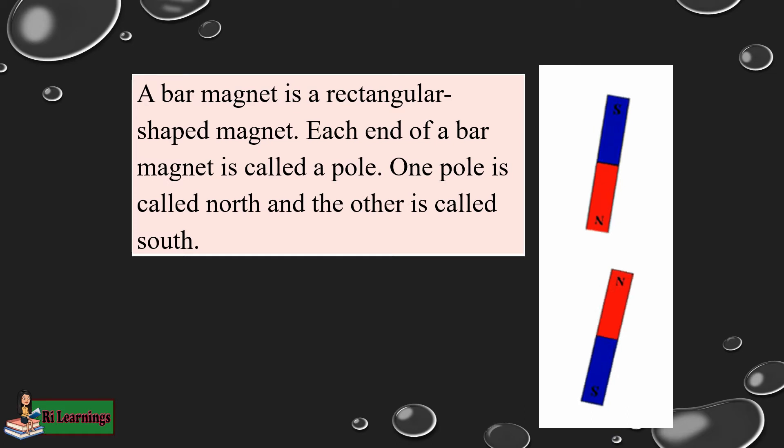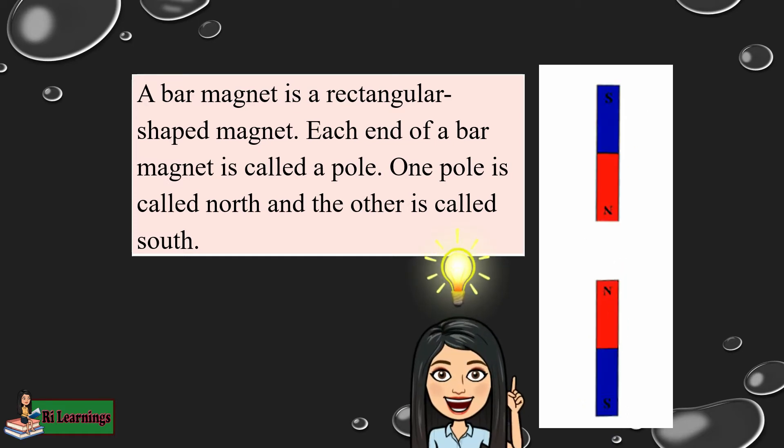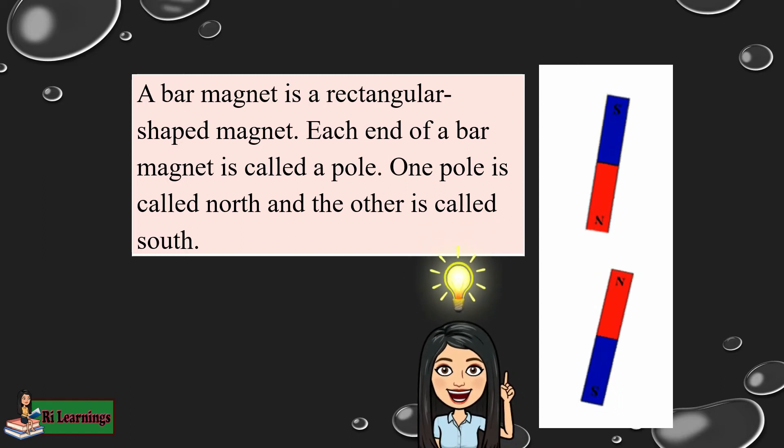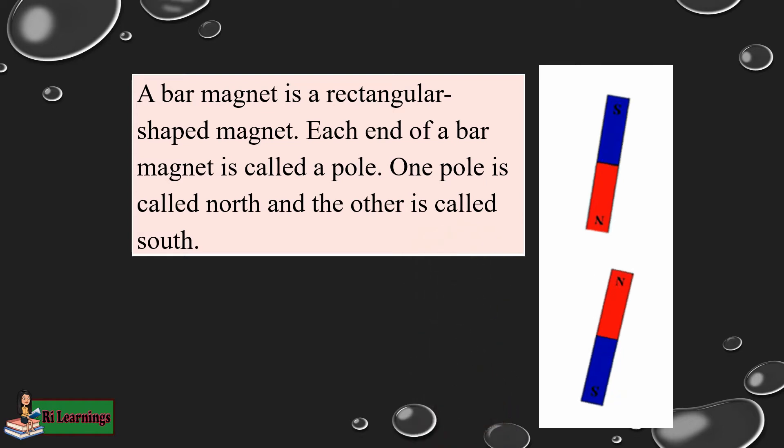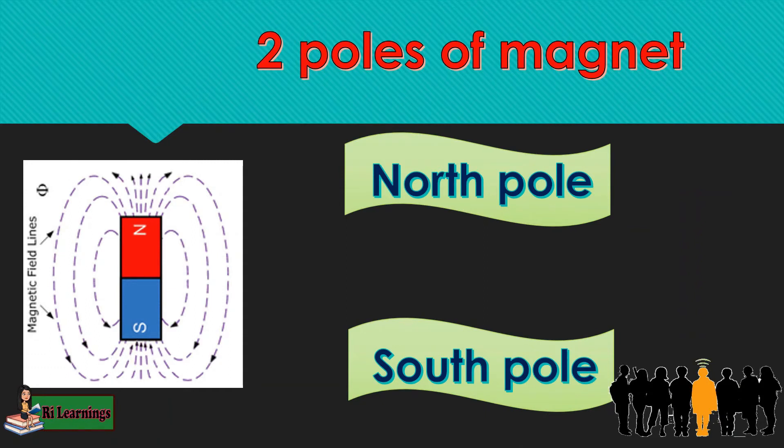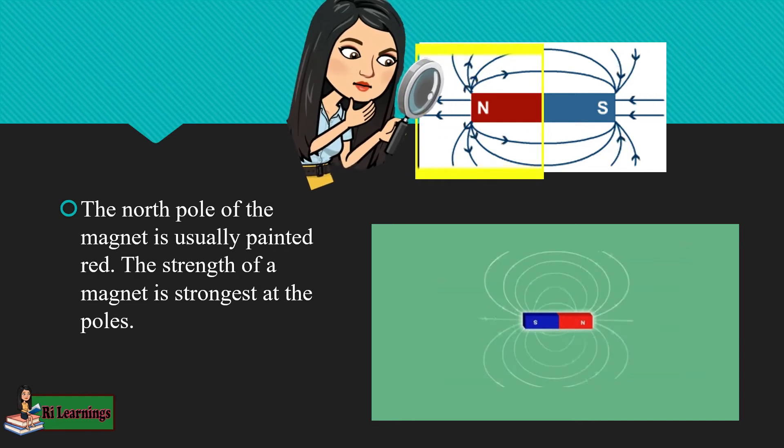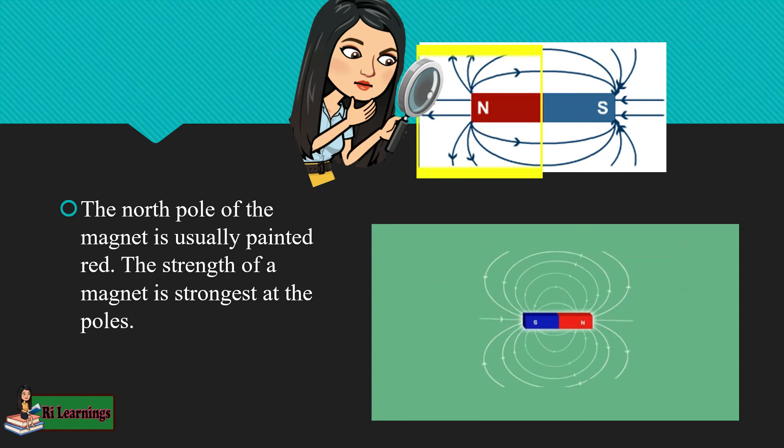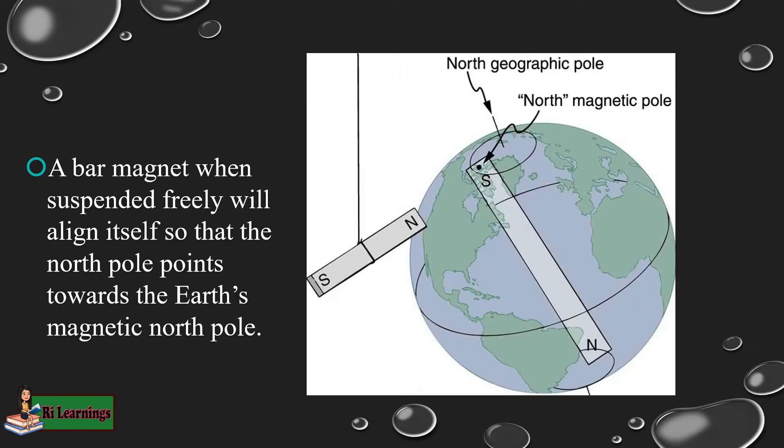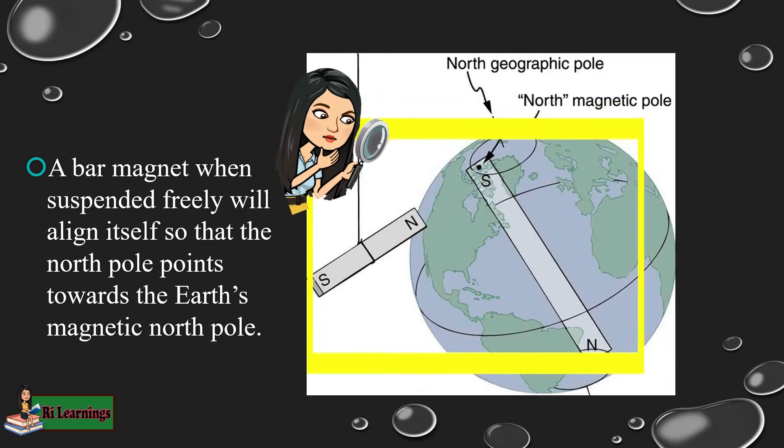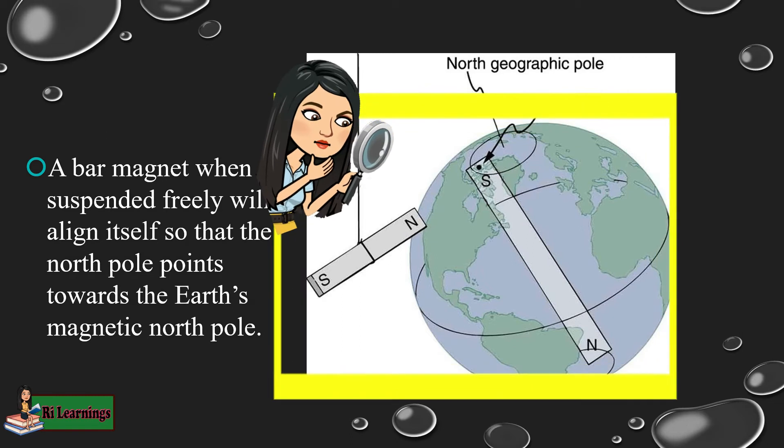A bar magnet is a rectangular shaped magnet. Each end of a bar magnet is called pole. One pole is called north and the other is called south. These are the two poles. A bar magnet when suspended freely will align itself so that the north pole points towards the earth's magnetic north pole.